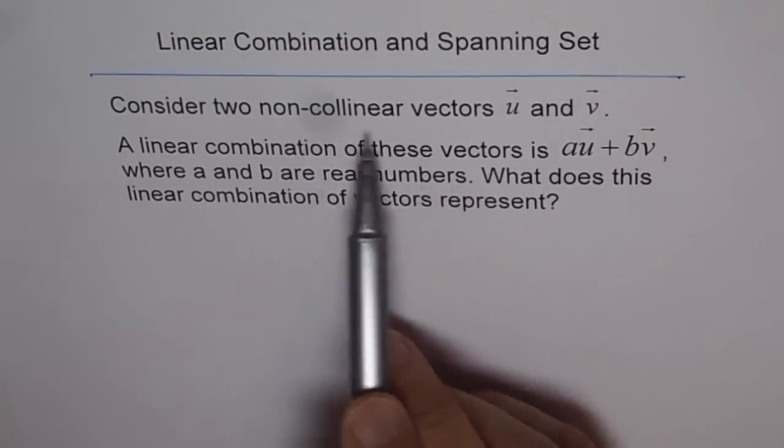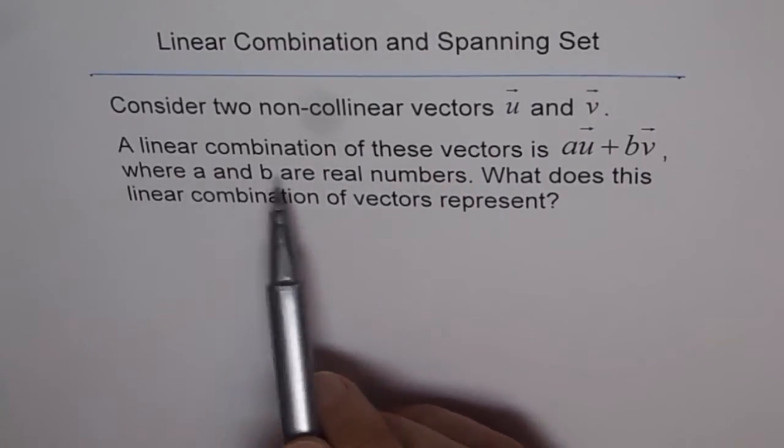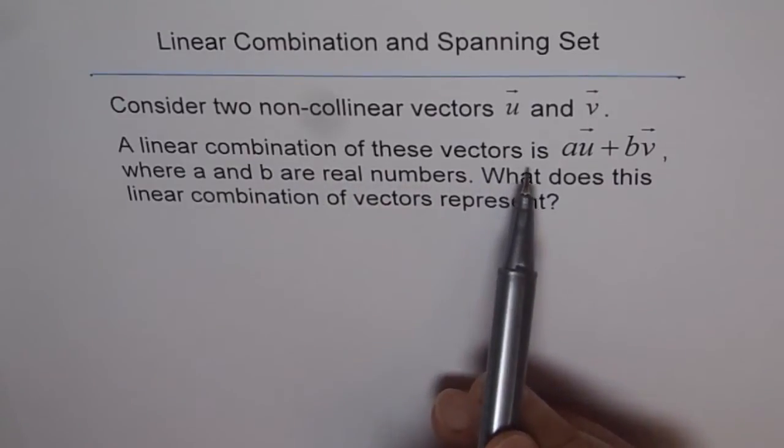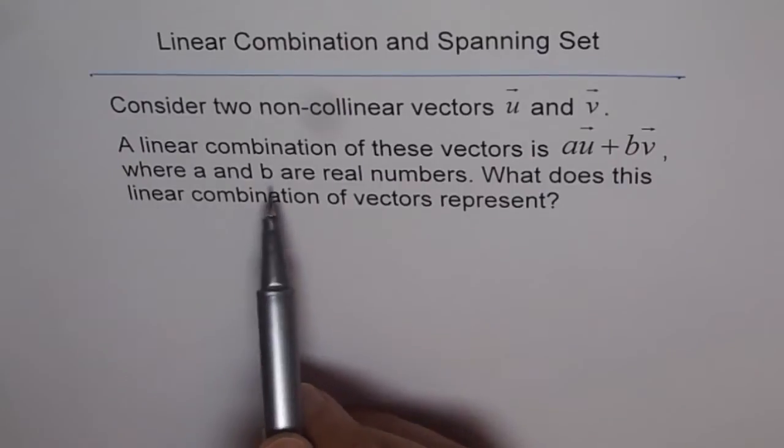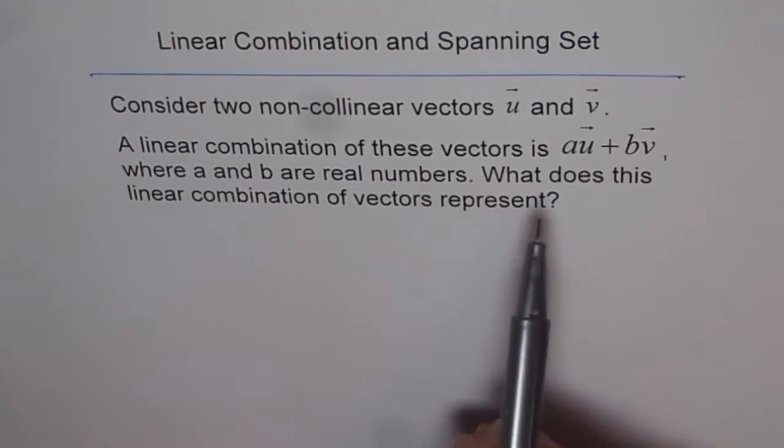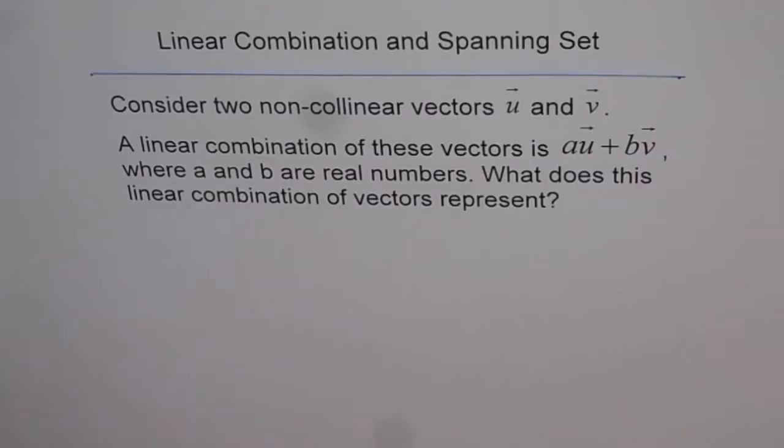That means they are not along the same straight line. A linear combination of these vectors is au plus bv, where a and b are real numbers. What does this linear combination of vectors represent?